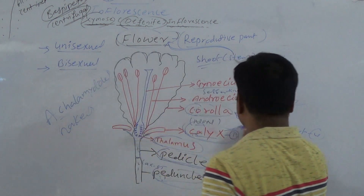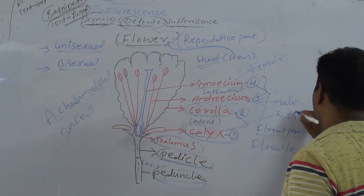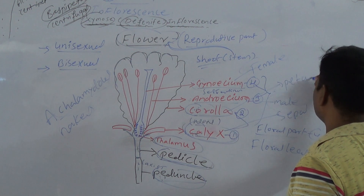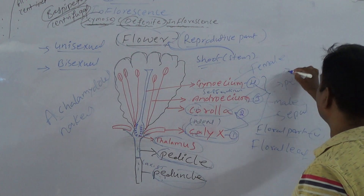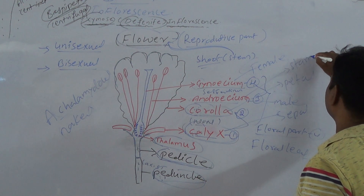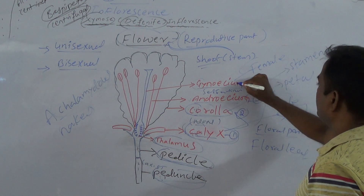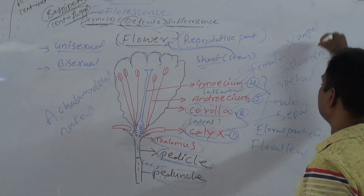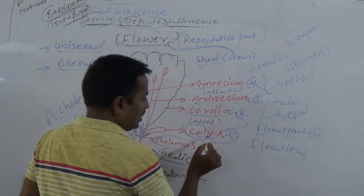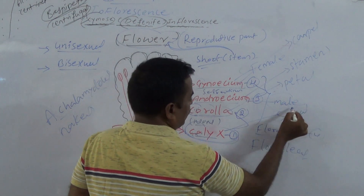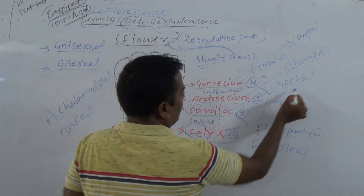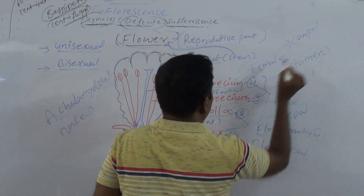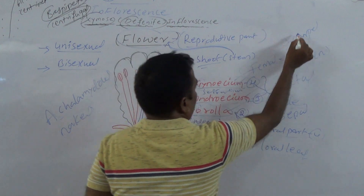The unit of Calyx is called sepal. The unit of Corolla is called petal. The unit of Androecium is called stamens. The unit of Gynoecium is called carpel.